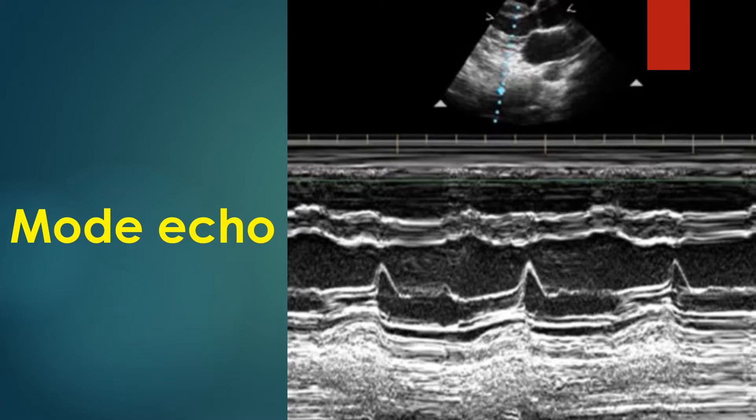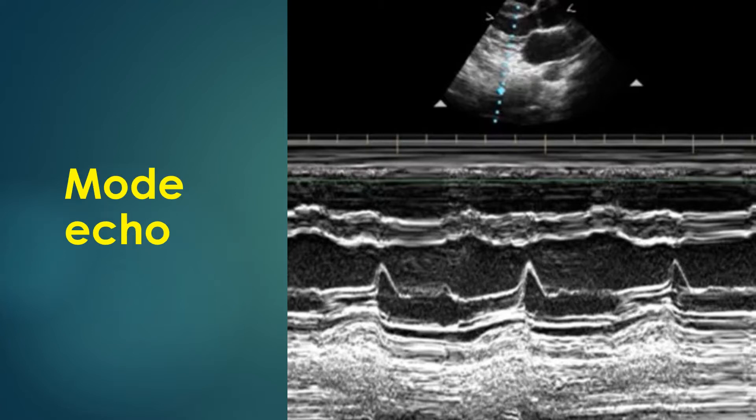The left ventricular posterior wall moves anteriorly towards the left ventricular cavity in systole. The systolic and diastolic measurements are taken using computerized calipers and the software calculates the dimensions and ejection fractions. The interface between two different media produces the best echoes, as demonstrated in the pattern of the interventricular septum — both upper and lower margins are echodense while the intervening tissue is less echodense.